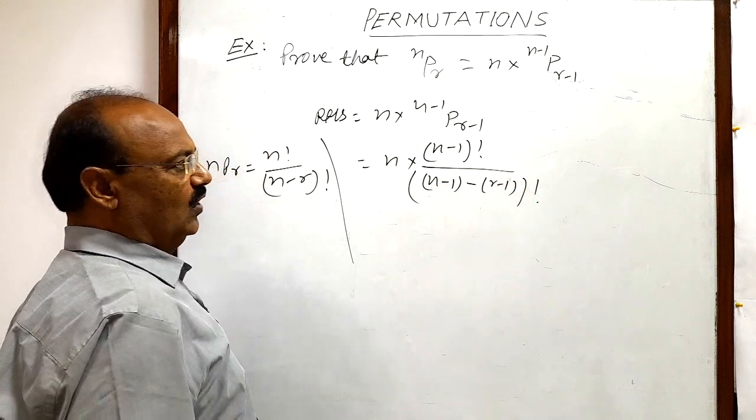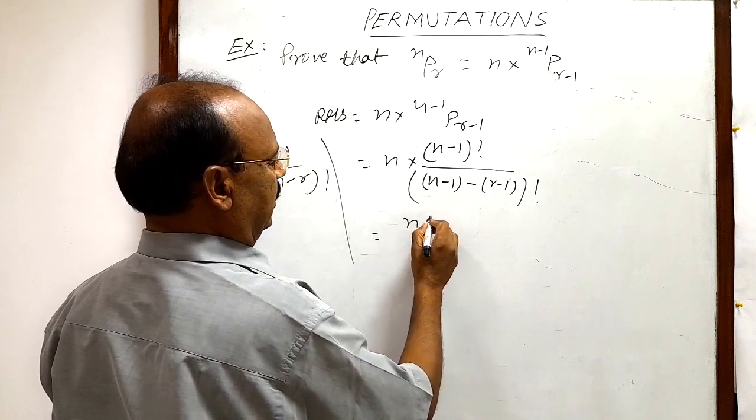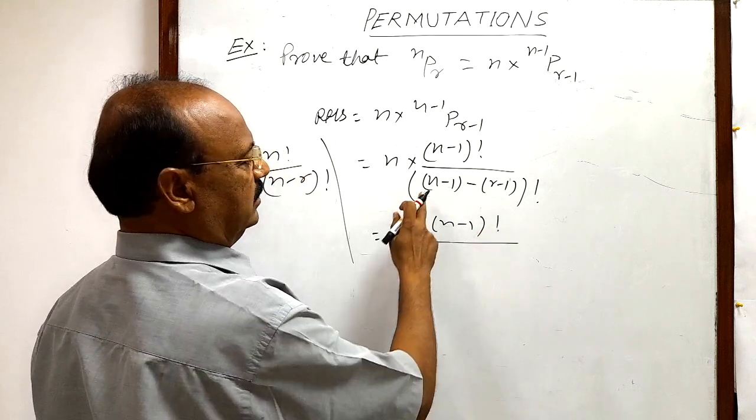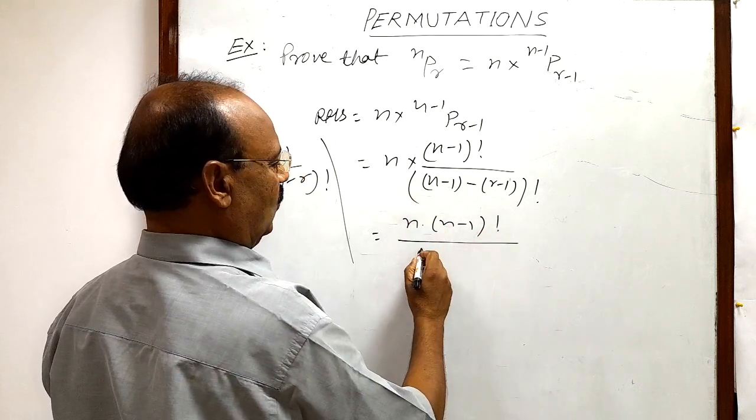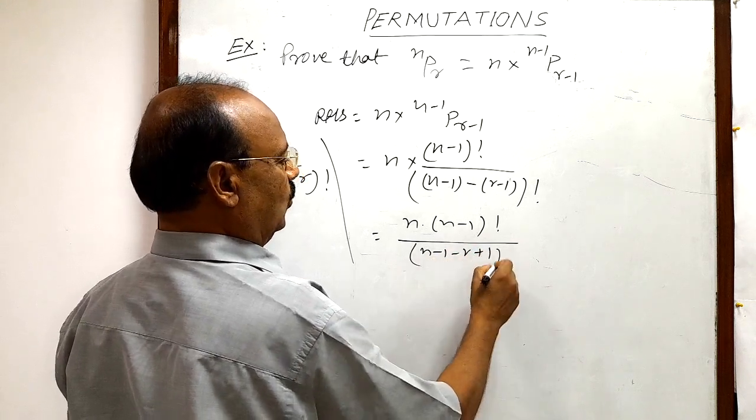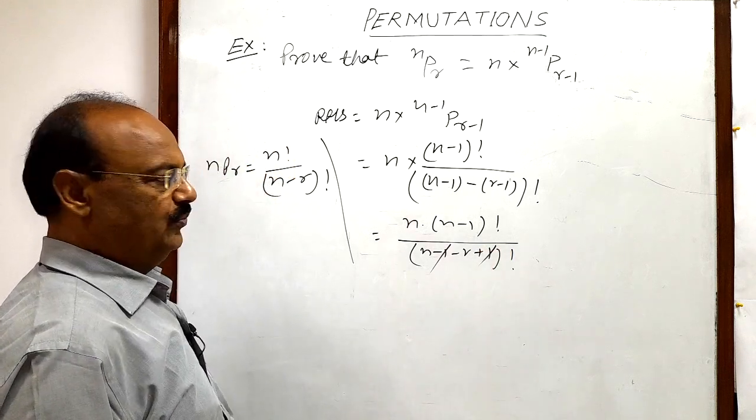And this is equal to n into n minus 1 whole factorial divided by n minus 1 minus r minus r minus 1 whole factorial. So this minus 1 and plus 1 will be cancelled out, correct.